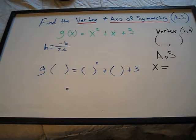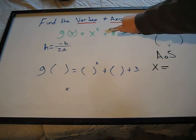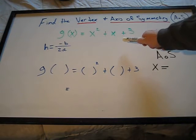Today we're going to be solving a math problem. We're going to find the vertex and the axis of symmetry of g(x) equals x squared plus x plus 3.